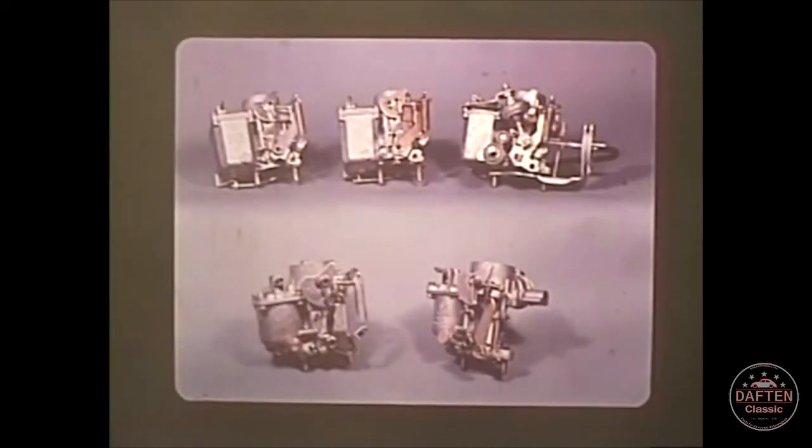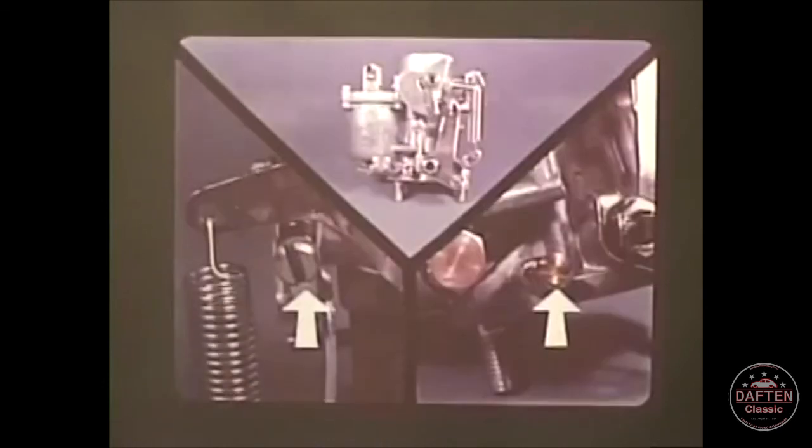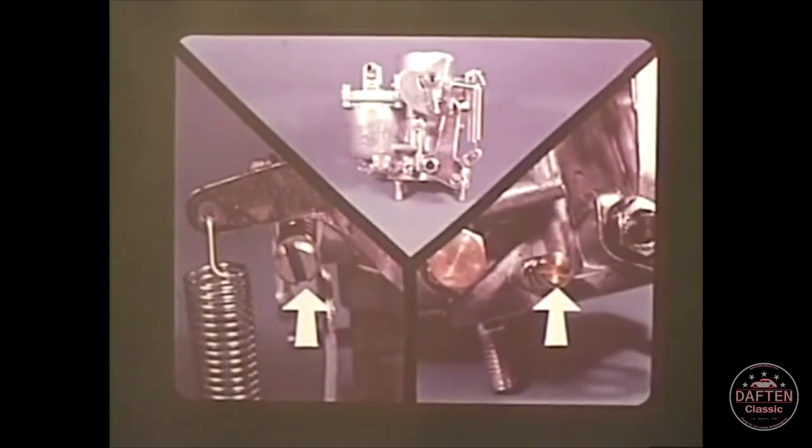All Volkswagen carburetors, from the 28 PICTs to the latest 34 PICT-3, work on the same principles. Correct idle adjustment on all of them depends on a precise balance of fuel and air at the proper RPM. Careful adjustment of the volume control screw and idle speed screw are essential on the older carburetors.